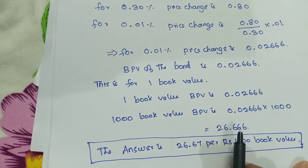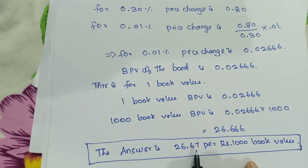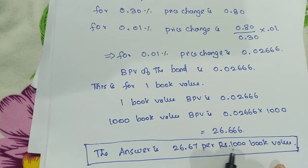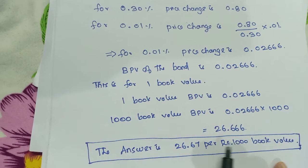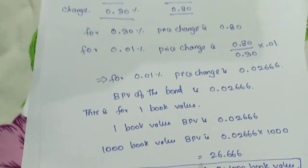So the answer is 26.67 per 1000 book value. This is our solution.